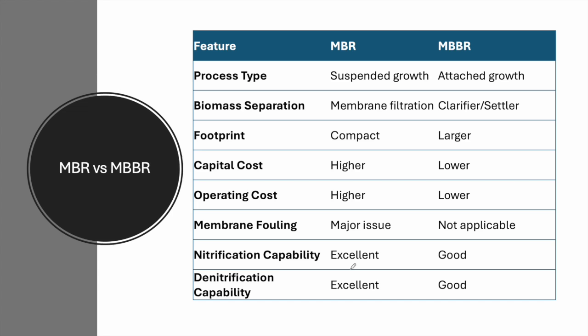Now let's go more in depth on the comparison. For the MBR, we have a suspended growth process with advanced membrane filtration. For the MBBR, we have attached growth — microorganisms attach to the MBBR media. Biomass separation for the MBR is through membrane filtration; for the MBBR it is through the secondary clarifier, where activated sludge settles. For footprint, the MBR is more compact than the MBBR.